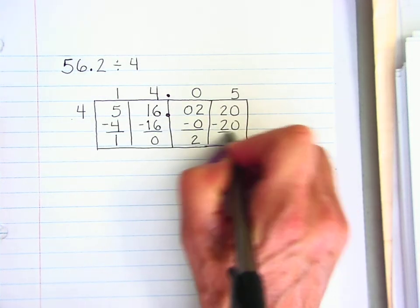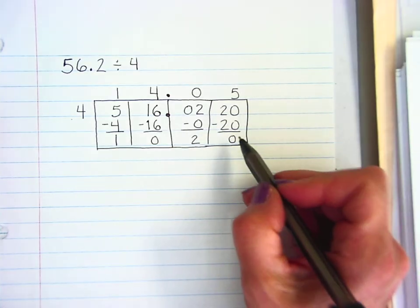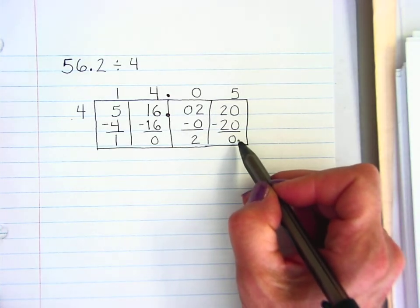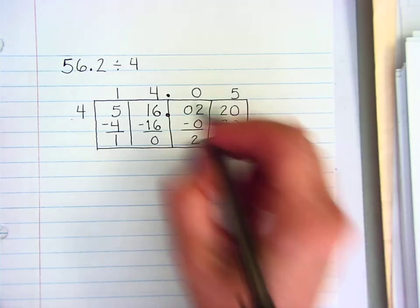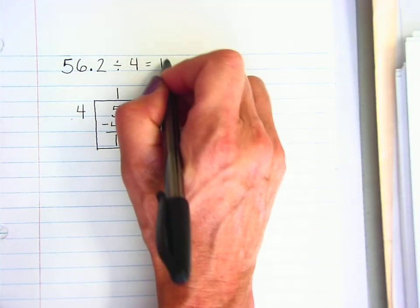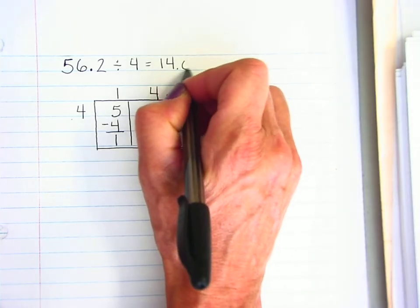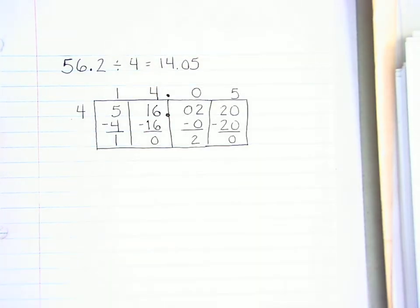And when I subtract, I have 0 left over. And that's what I'm looking for. When I'm all done, I have to have a remainder of 0. So my answer is 14 and 5 hundredths.